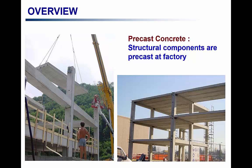Another construction technique is precast concrete structures, where the concrete is cast off-site, mostly in factories, and then the precast concrete elements are transported to the site for assembly. As you can see in the first picture, the slabs and columns are precast elements being transported to the site and then assembled there.